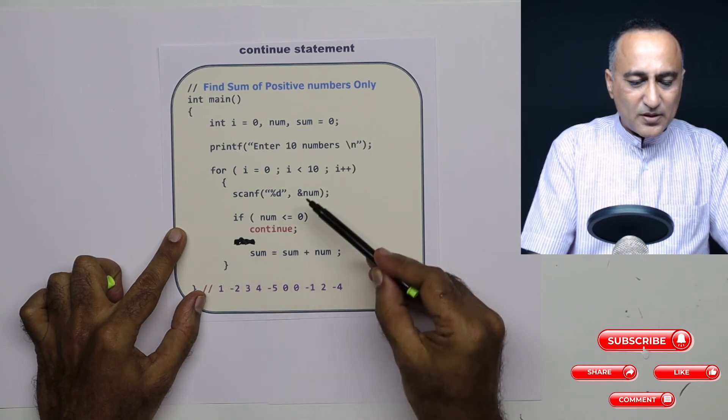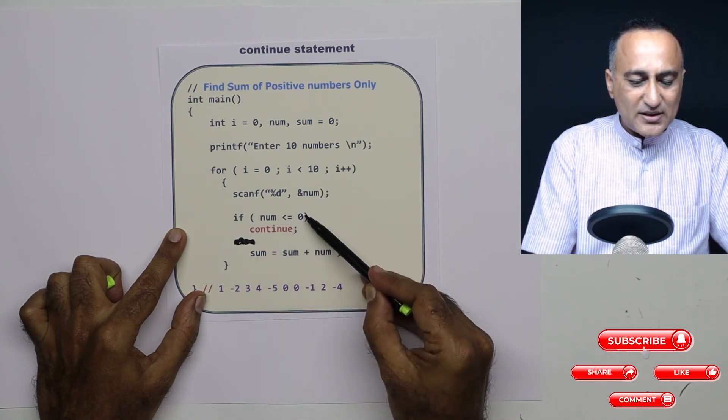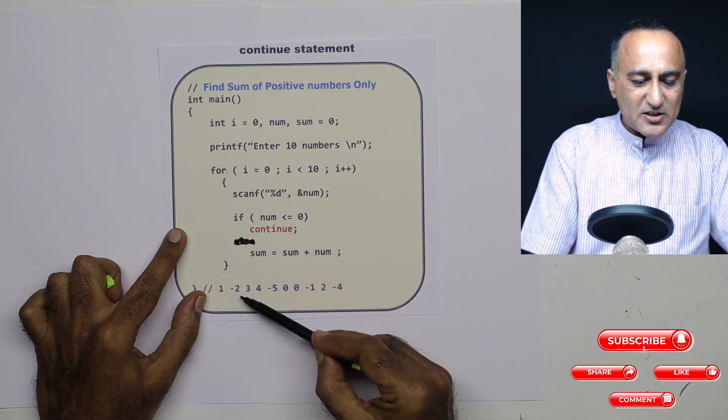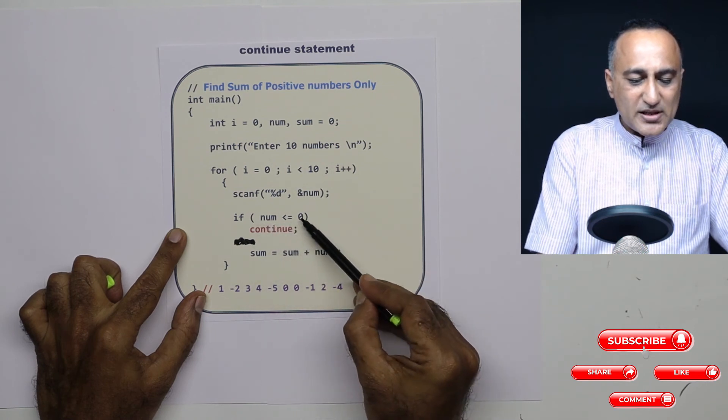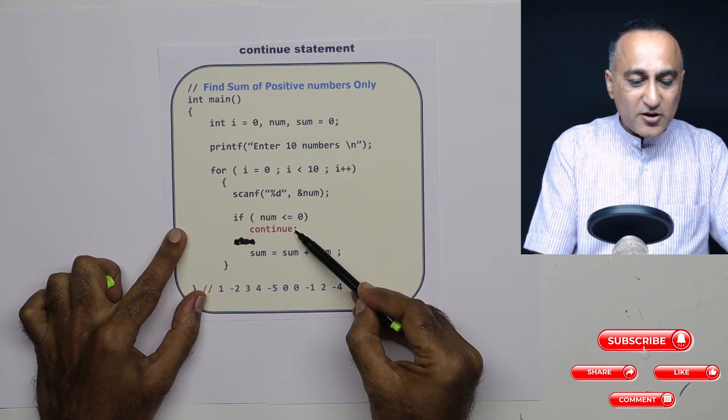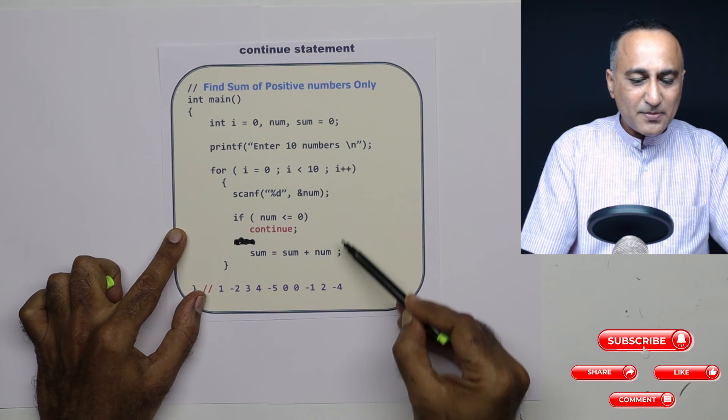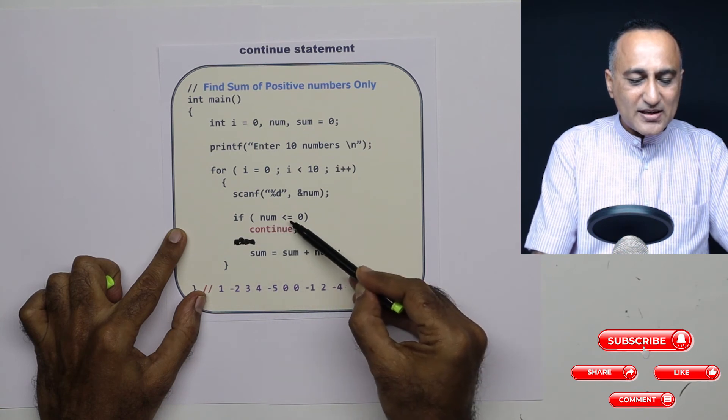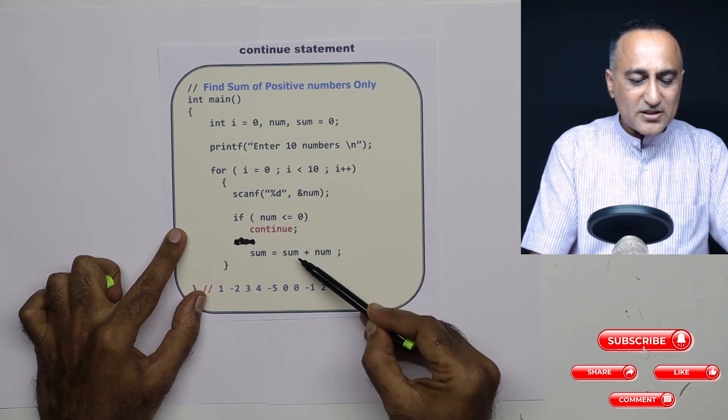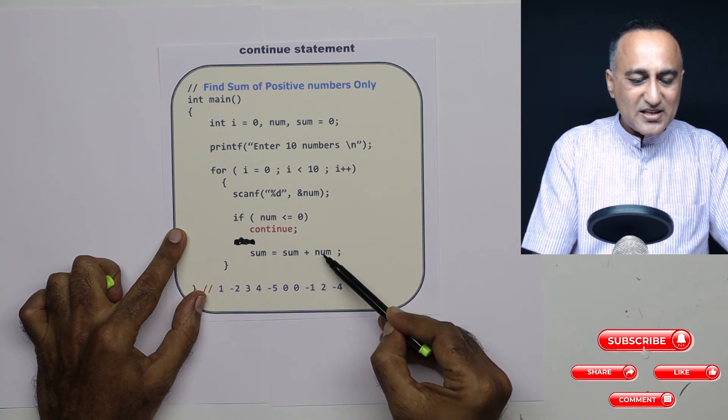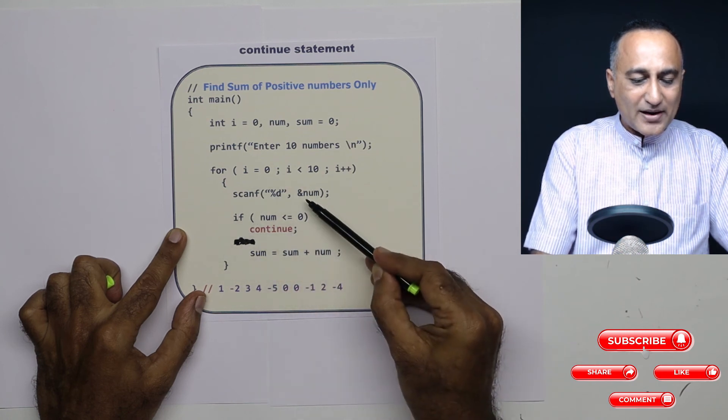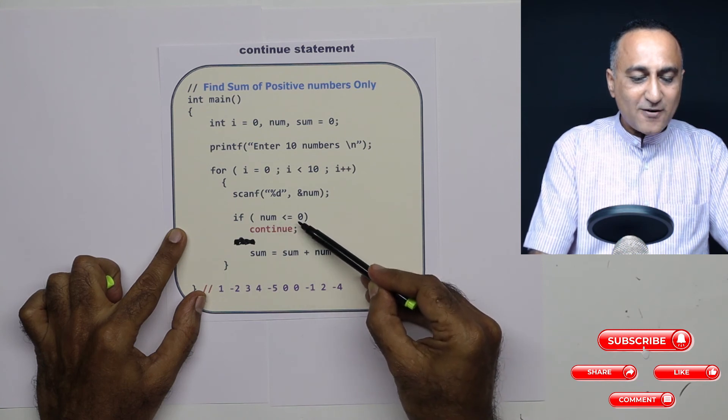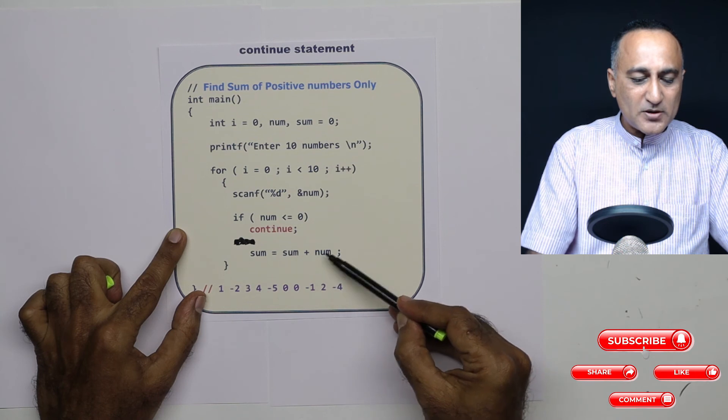Once the number is one, one is less than or equal to zero, this condition is false. So sum is now zero plus one, sum is one. Then it reads the next number is minus two. Now, number minus two is less than or equal to zero is true. So because it hits the continue statement, it will not execute this sum statement, it will go and increase i by one. Next number is three. Since number is three, three is not less than or equal to zero. So this condition is false, it will come here. Sum was one, one plus three is four. So sum is now equal to four. I go back here, I read the next number, number happens to be four. So four is less than or equal to zero is false. So it will come here. Sum was four, four plus four now is eight.